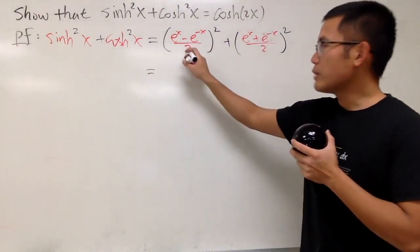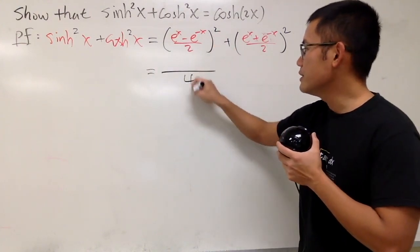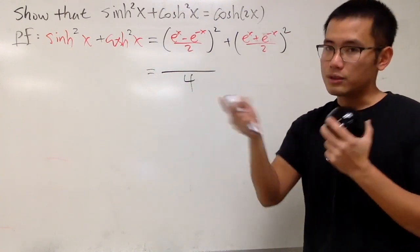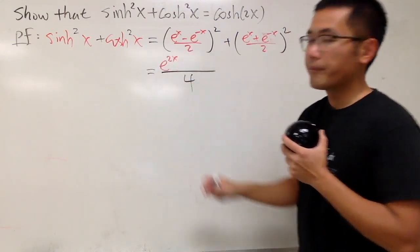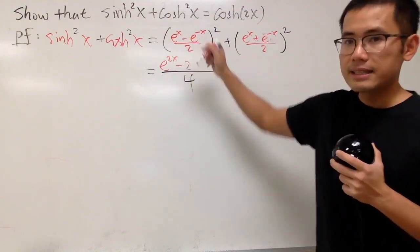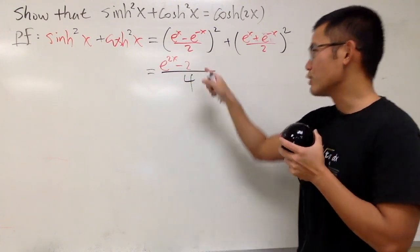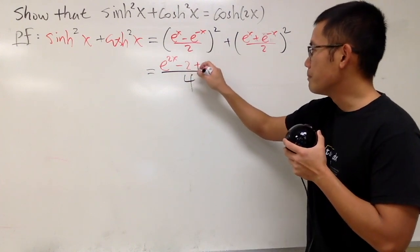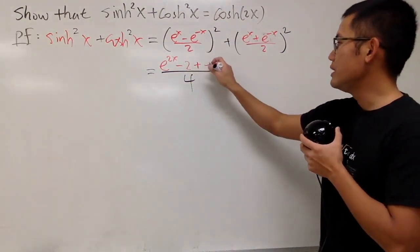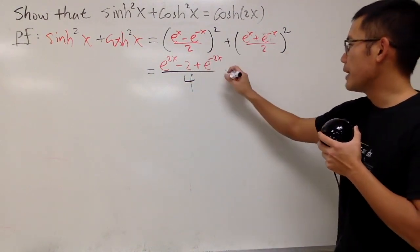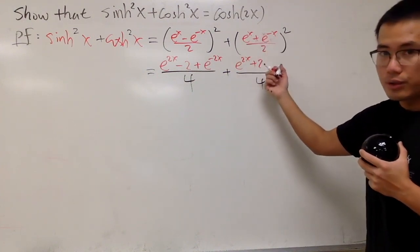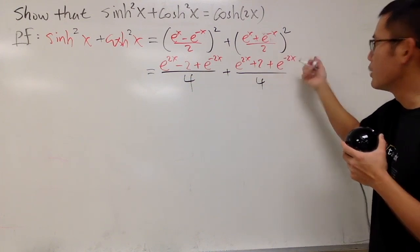The denominator for both squares is 4. For sinh squared, expanding the numerator gives e to the 2x, minus 2 times e to the x times e to the negative x (which is minus 2), plus e to the negative 2x. For cosh squared, expanding gives e to the 2x, plus 2, plus e to the negative 2x. Both fractions share the same denominator of 4.